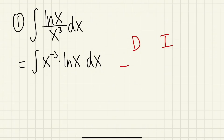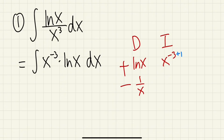Let's set up the D and I table. We will be differentiating ln(x) and integrating x to the negative 3. Differentiating ln(x), we get 1/x. Integrating x to the negative 3, add 1 to the power divided by the new power, giving us negative 1/2 x to the negative 2.